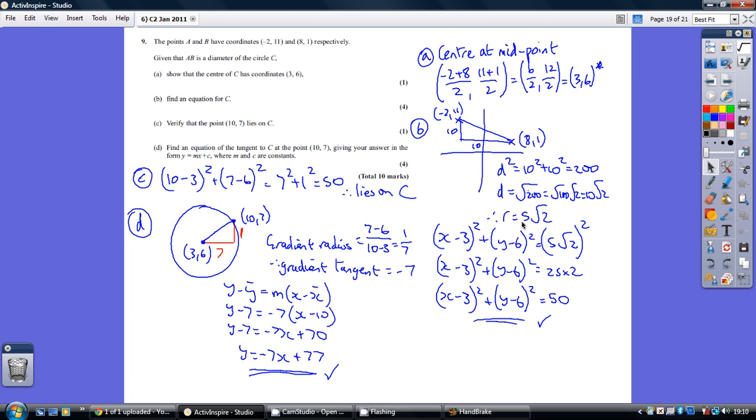So, the formula for a circle is, basically, if you remember, is x minus x1 plus y minus y1, both of these squared, equals the radius squared, with this coordinate here being the centre. So, the centre is 3, 6.